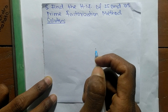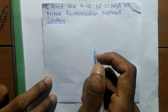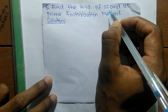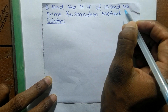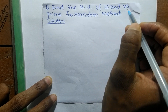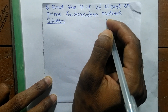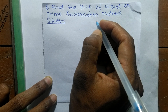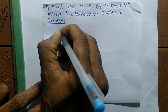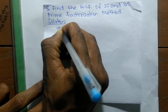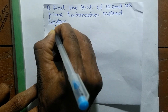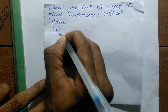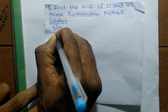Today in this video we shall learn to find the HCF of 15 and 45 by the prime factorization method. First we find out the prime factors of 15, so it is 3 times 5, which equals 15.